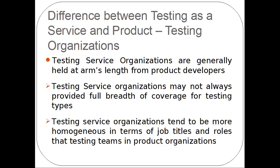The second difference is that testing service organizations may not provide the full breadth of coverage — they will do one kind of testing like black box testing, domain testing, or specialized testing like performance testing, but not wide-box testing. The third difference is that testing service organizations tend to be more homogeneous. In a product organization you have many teams — development, maintenance, support, and testing — but in a testing service organization, the job titles and job definitions are all the same kind.